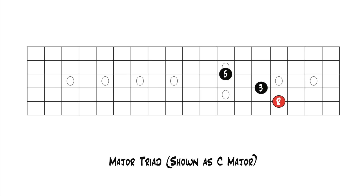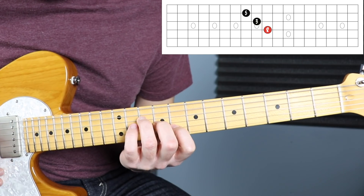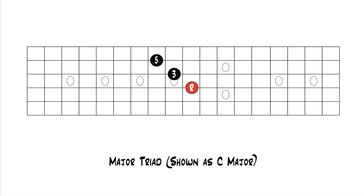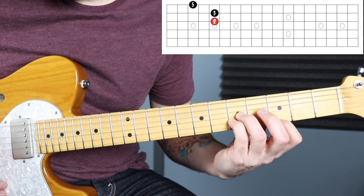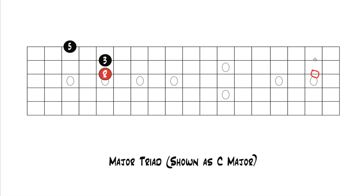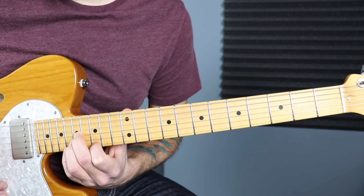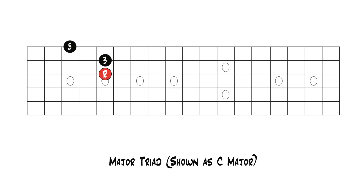If you want a C major triad with the root on the fourth string, find the C note on the fourth string and build from there. For the root on the third string, find the C on the third string — there's also one an octave higher. The guitar fretboard is laid out so that if you keep shapes within the same frets, they'll have different names because they'll have different roots. If you want the same chord name, you move up or down the fretboard to wherever that root note lands.